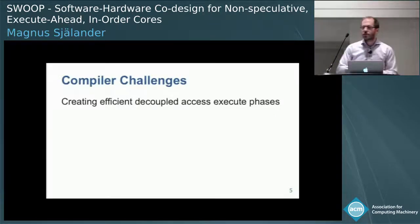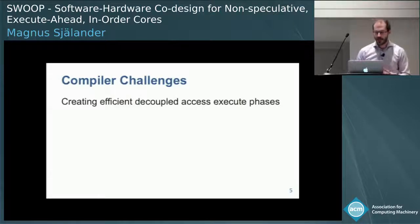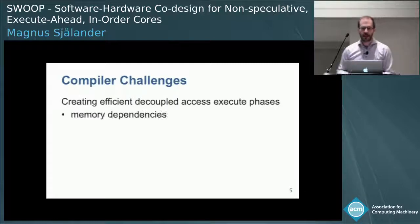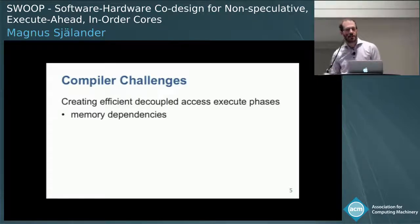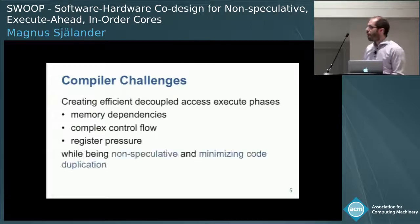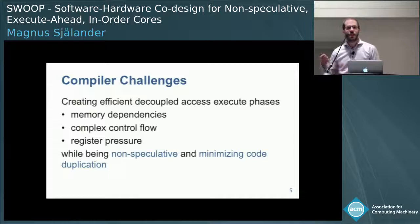Doing this type of software transformation raises a number of compiler challenges. How can we create efficient decoupled access-execute phases when we have things like memory dependencies, complex control flow, and register pressure, while being non-speculative and minimizing code duplication?